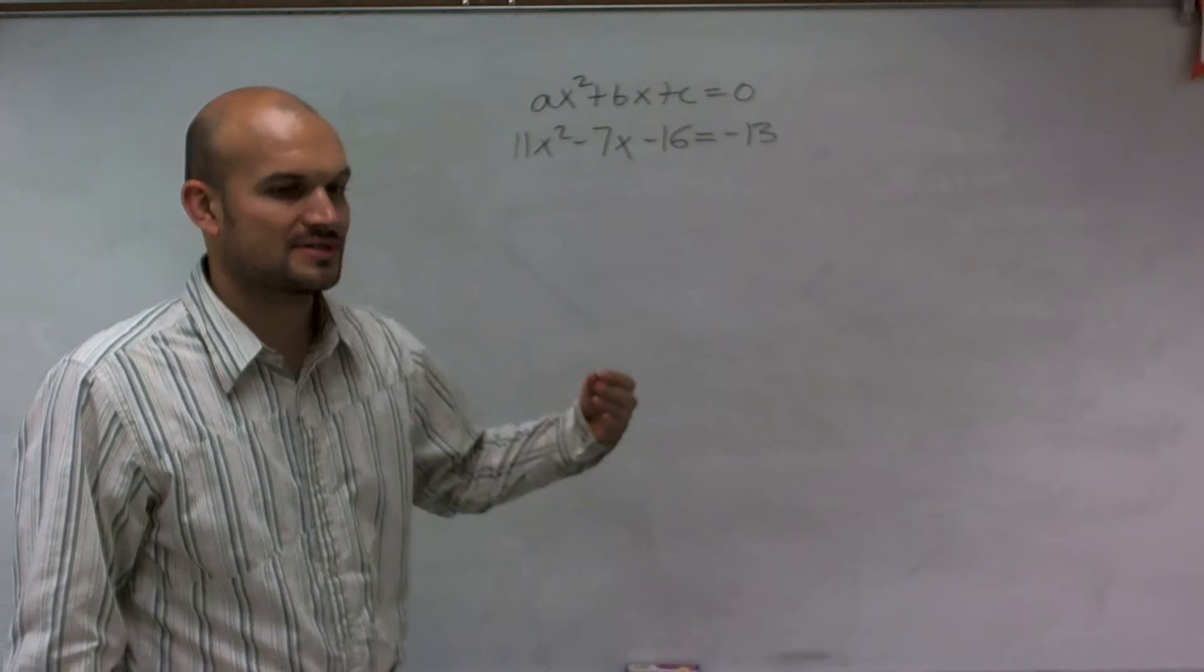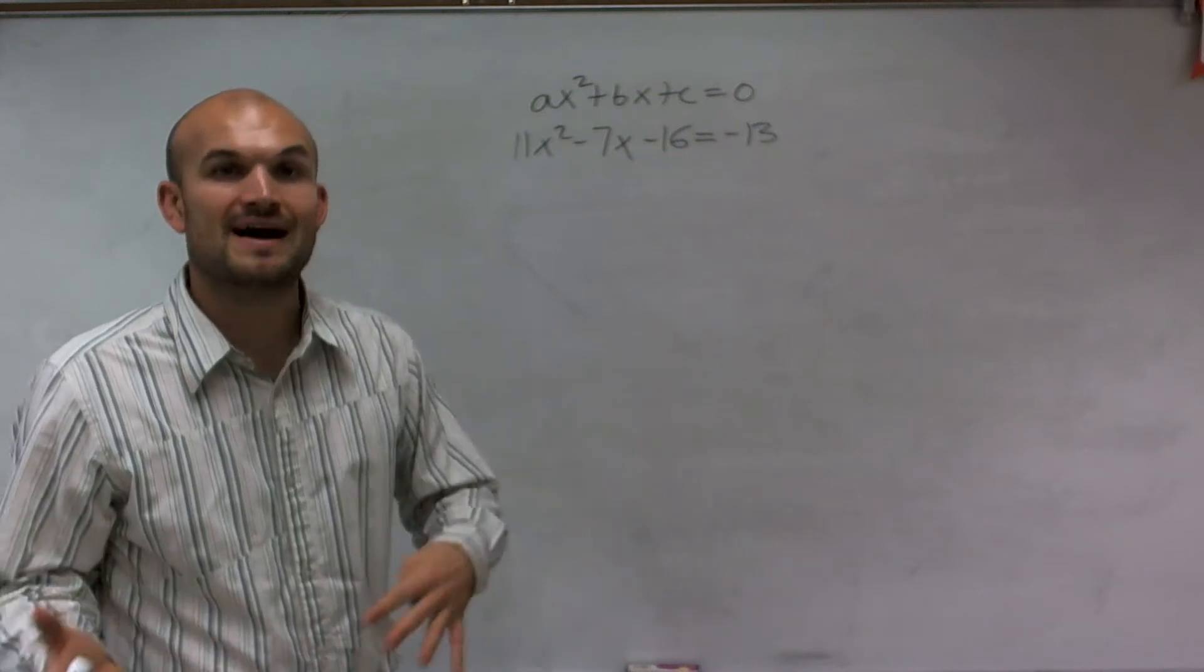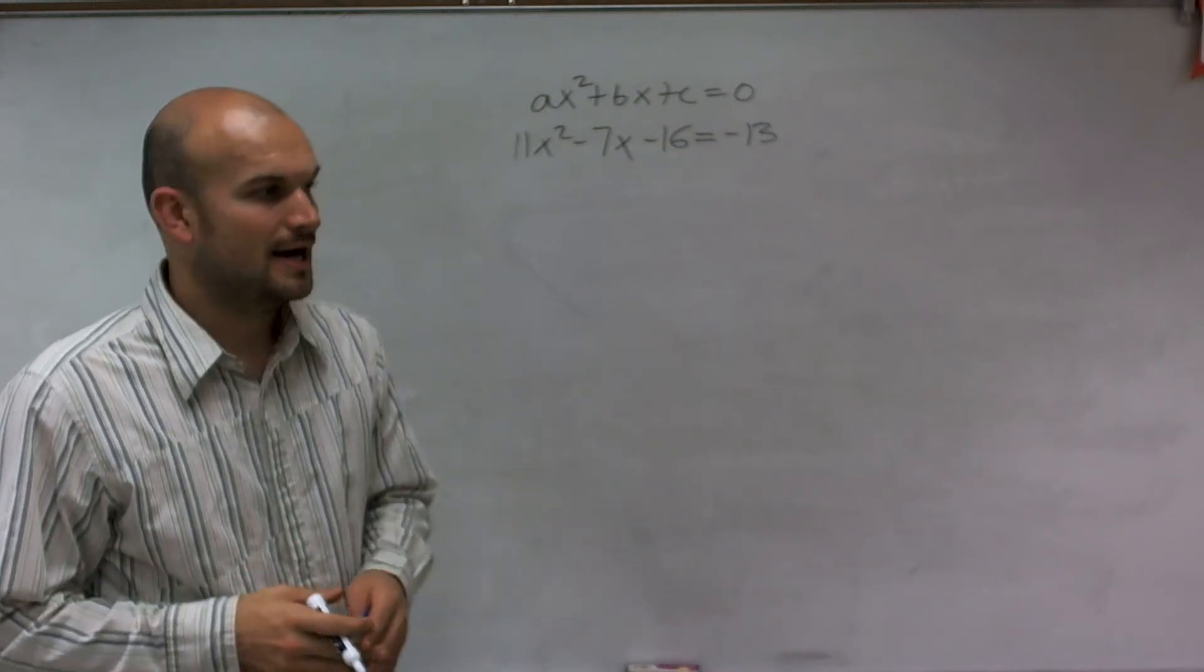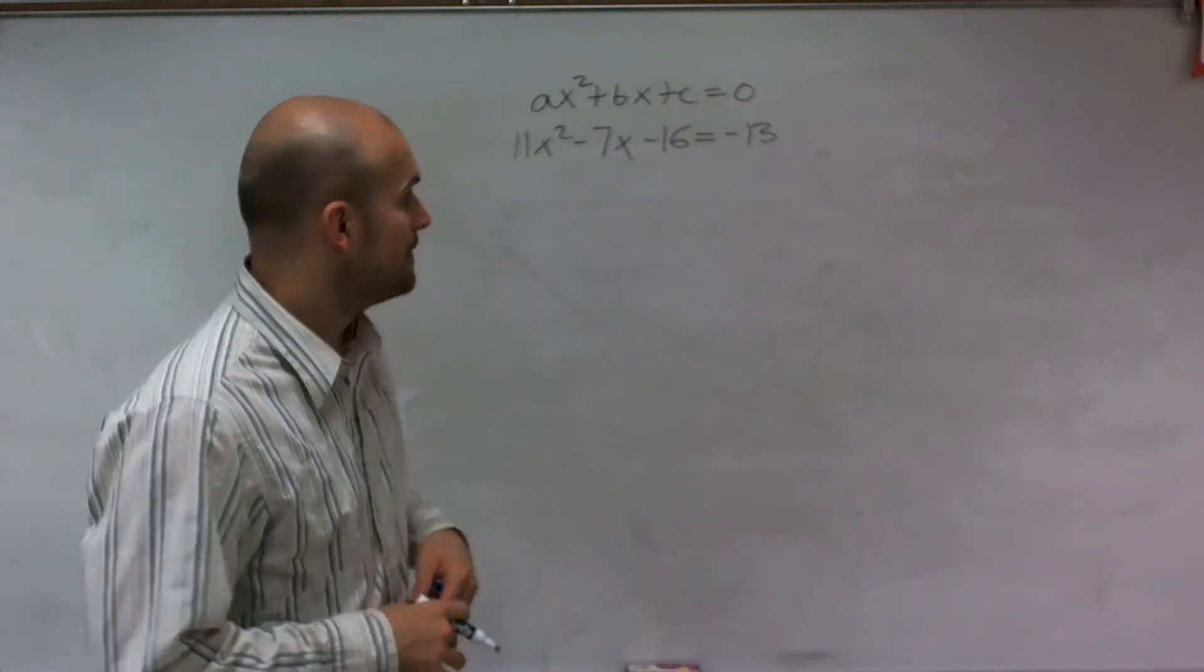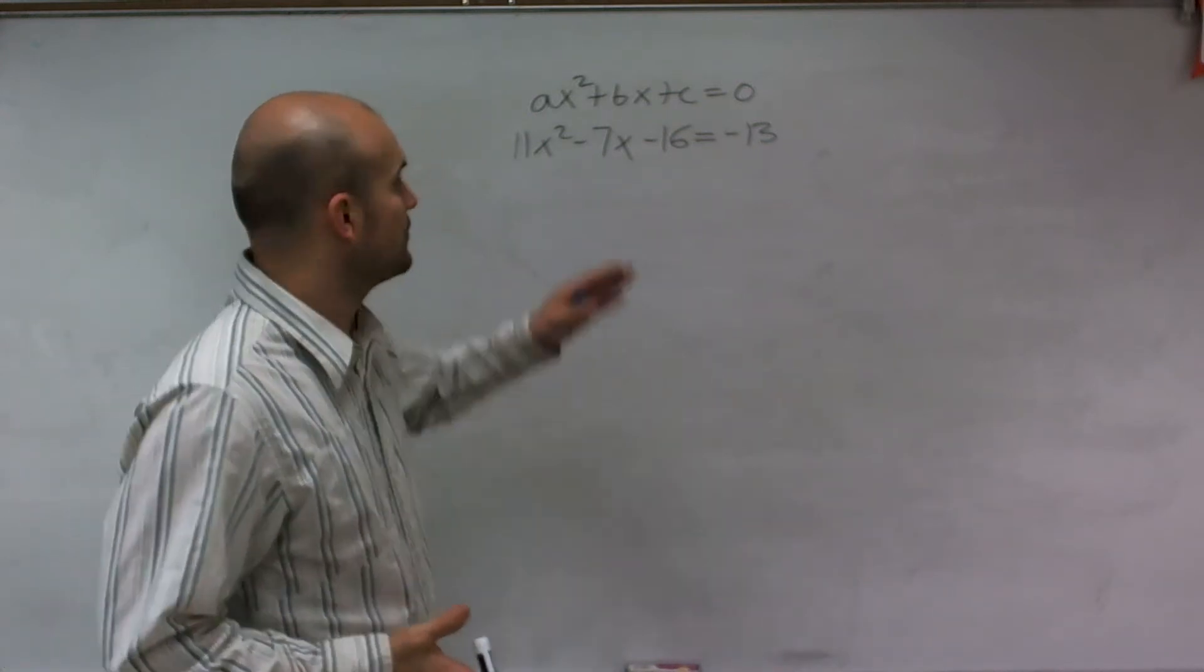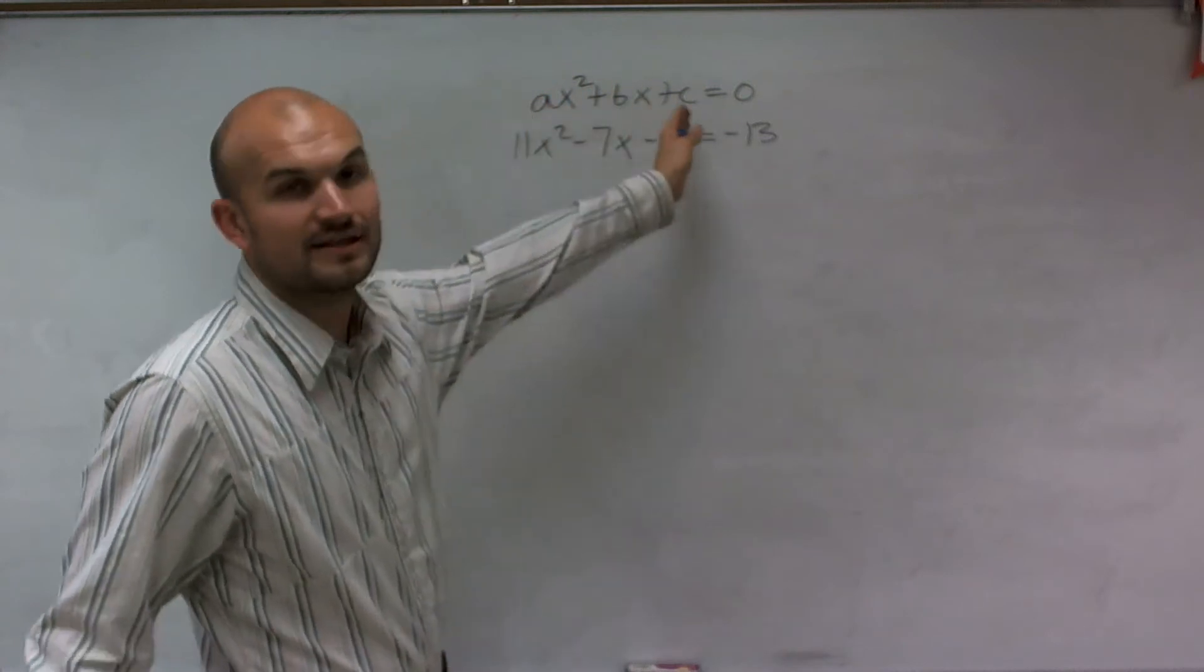And for this problem, we're setting it equal to 0 because we're going to want to find the answers and the solutions. However, we're not actually going to get that far. We're just going to actually find the discriminant. But it's important for you to understand, though, when you put it in this quadratic form.